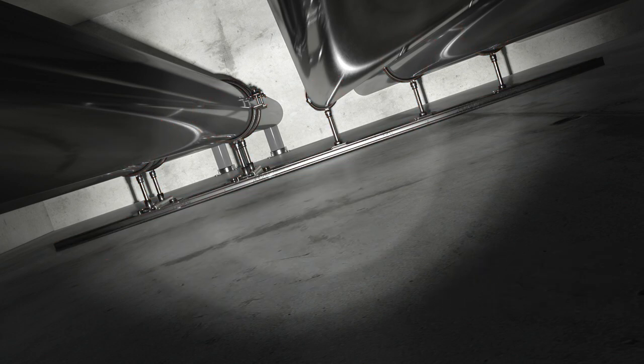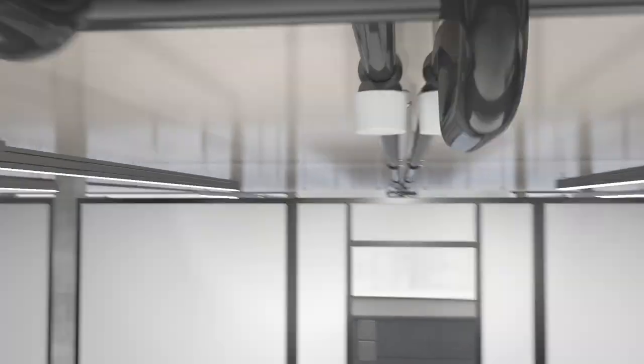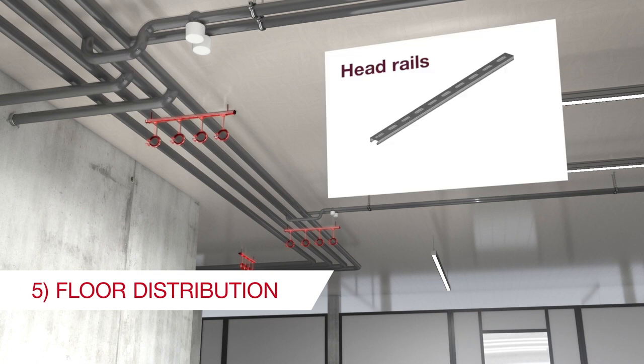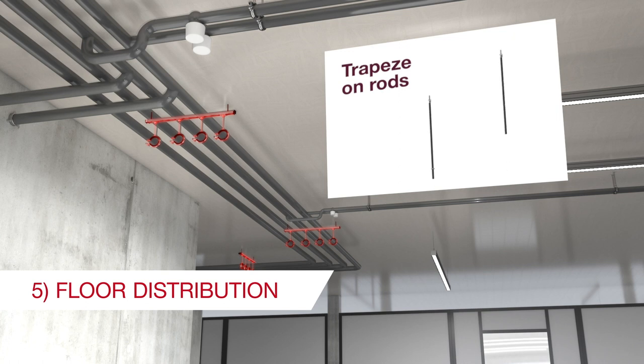Where pipes enter the floor, we enter the fifth phase, called floor distribution. Pipes are supported on head rails or trapeze on rods.